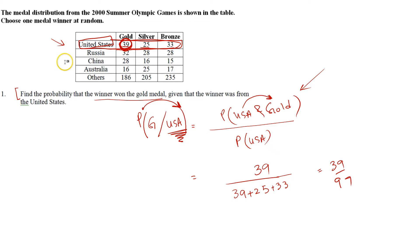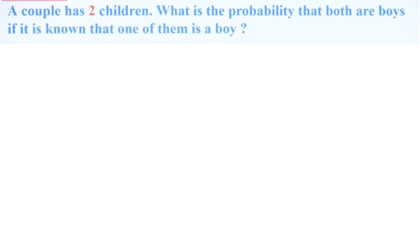A couple has two children. What is the probability that both are boys, if it is known that one of them is a boy? 'Known' indicates conditional probability. We need: P(both boys | one is a boy). A couple could have: boy-girl, boy-boy, girl-boy, or girl-girl. Since one is already a boy, the girl-girl case is eliminated.